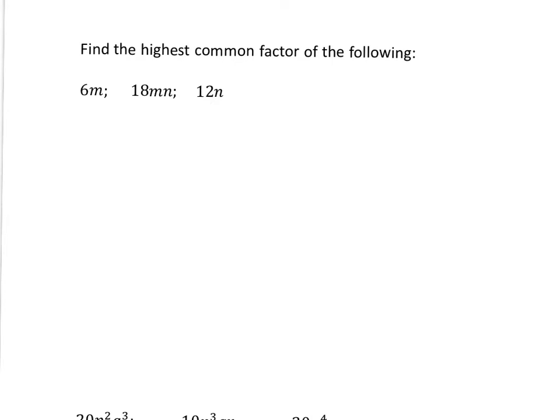Now, I'm going to show you my little method for doing this. What I do is I write each of these things underneath each other, and I pay very careful attention to putting numbers under numbers, m's under m's, and n's under n's. So, 6m, 18mn, and then 12n.